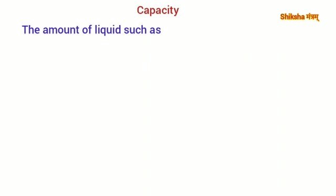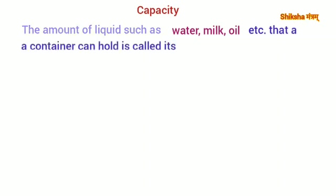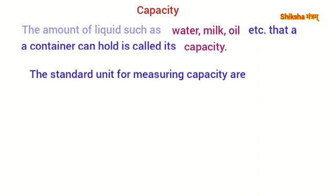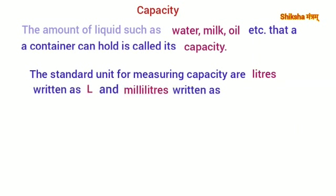The amount of liquid such as water, milk, oil, etc. that a container can hold is called its capacity. The standard units for measuring capacity are liters, written as L, and milliliters, written as ml. 1000 ml is equal to 1 liter.